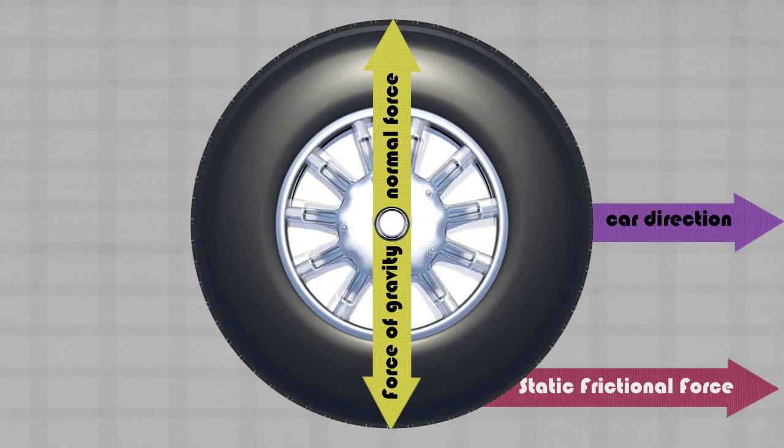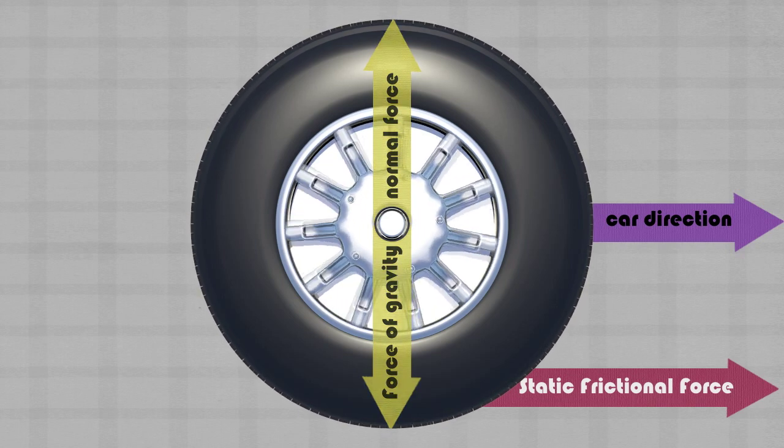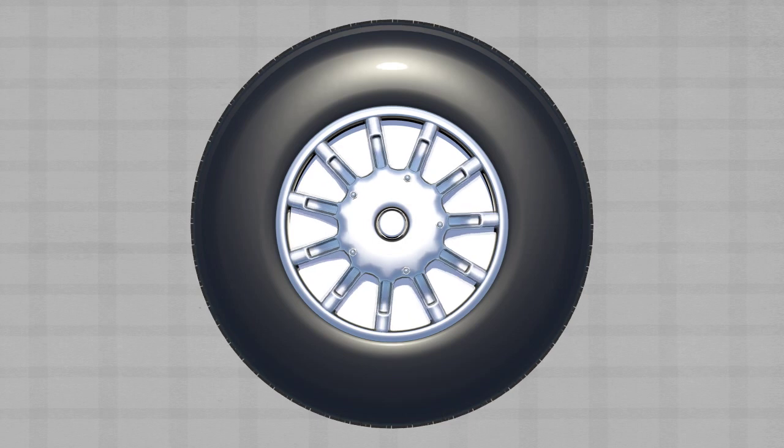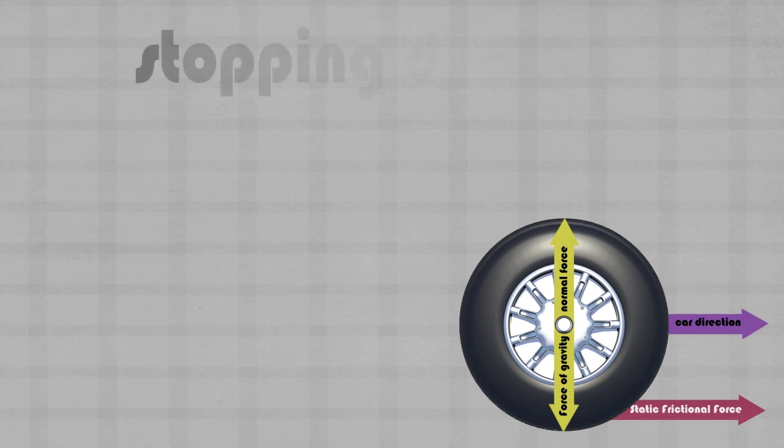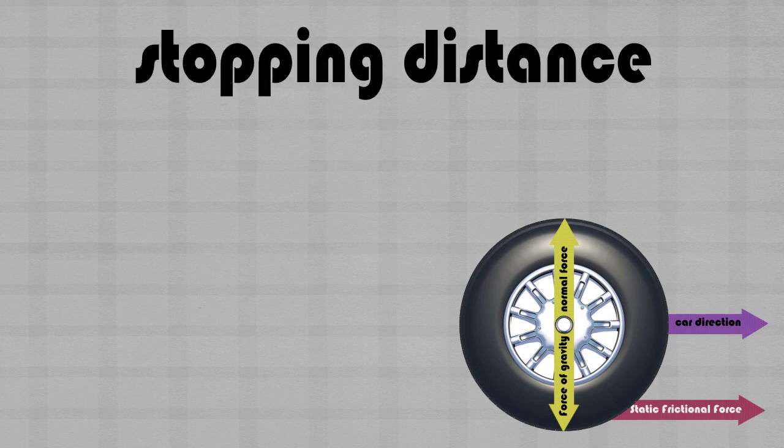There are also forces with y components in the diagram, the force of gravity and the normal force. These two forces oppose each other and are equal in magnitude. We can use these forces to calculate the stopping distance of the car if the brakes are applied steadily so that no skidding occurs.